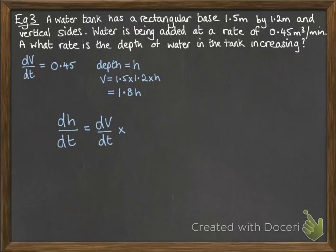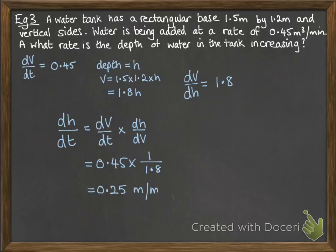That will be the rate we started with, dv by dt, times by dh, to introduce that into the equation, and dv to cancel out with that dv. So dv by dh we can get by differentiating v, so that would be 1.8. Then substitute it into our equation. We need to use 1 over 1.8, because we want dh over dv, but we've actually worked out dv over dh, so we just flip it over. Calculate what that is.